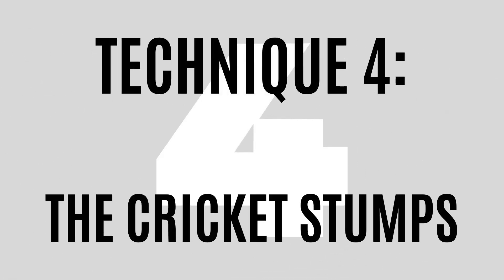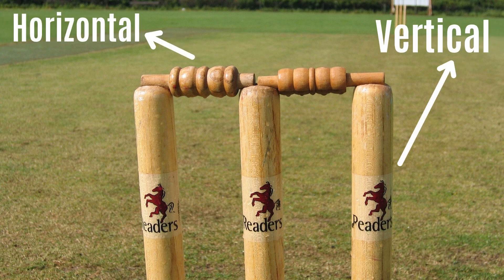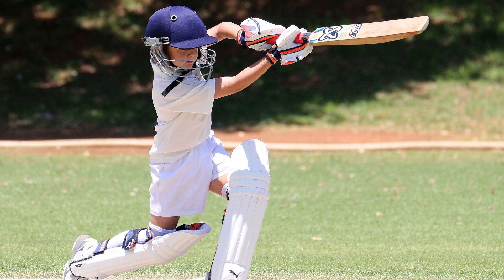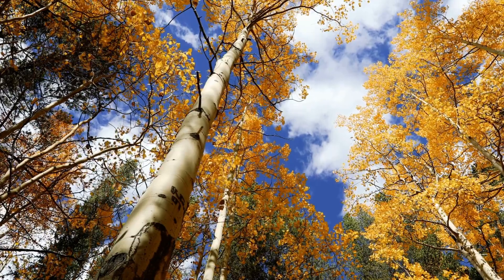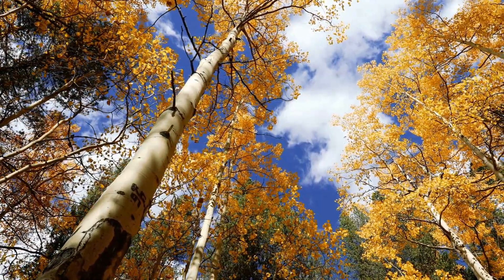Technique 4 – The Cricket Stumps. Cricket stumps have two components: the bales and the individual stumps. The stump is vertically arranged and the bales are horizontally arranged. This is a cool analogy that you can use to clear your confusion. This technique works especially best for those that play cricket. If you do not play cricket, then think of a tree — the trunk grows vertically and the branches grow somewhat horizontally.